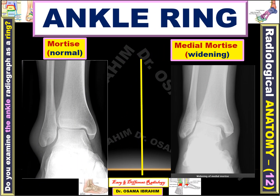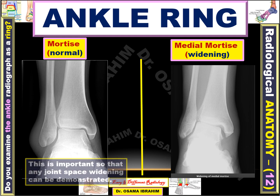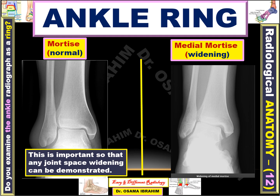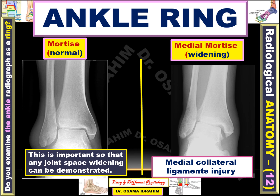This is a mortise AP in good position because the fibula does not overlap the talus bone. We can describe the distance between the talus and fibula and compare it symmetrically. Any joint space widening can be demonstrated this way. On one side the distance is normal and symmetrical, however on the other side there is medial collateral ligament injury resulting in widening of the medial mortise compared with the lateral side, representing medial collateral ligament injury.